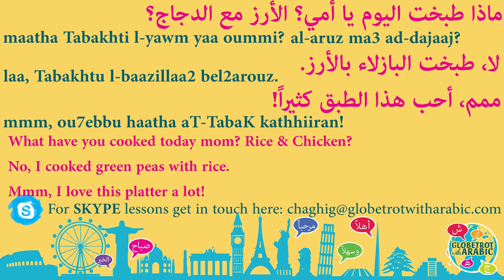الأرز — Rice. We say 'the rice' in Arabic. أل is the definite article. الأرز مع — with. الدجاج — we write it الدجاج but pronounce it الدجاج, because it starts with the letter دال, which is a sun letter. With all sun letters, we don't pronounce the lam of the 'al'.